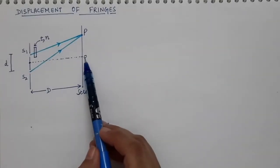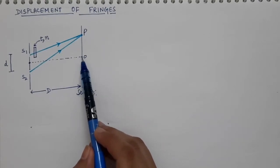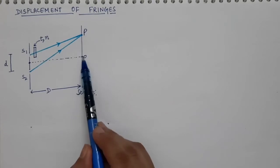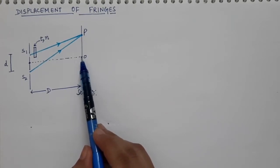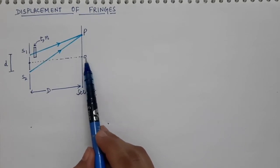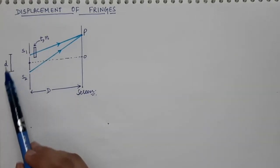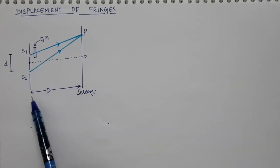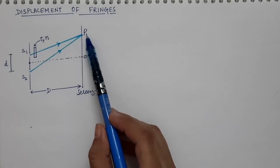Capital O is the center of the screen, and the central fringe of the interference pattern is observed at capital O. Small d is the distance between the two slits and capital D is the distance between the slits and the screen. We have taken an observation point capital P where the light from the two sources S1 and S2 is made to interfere.